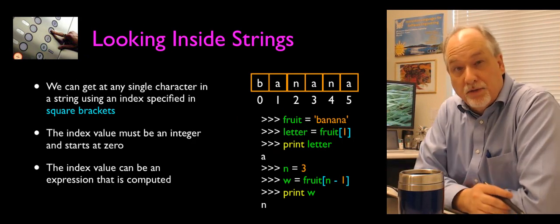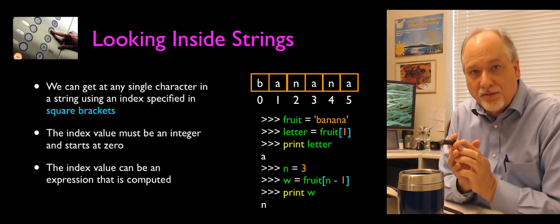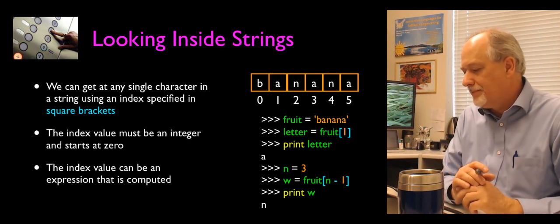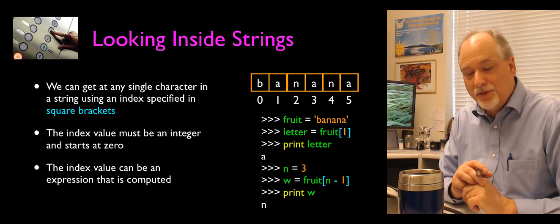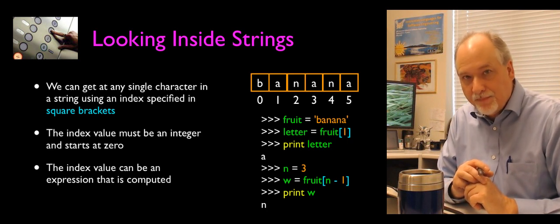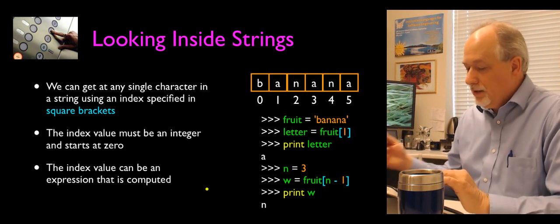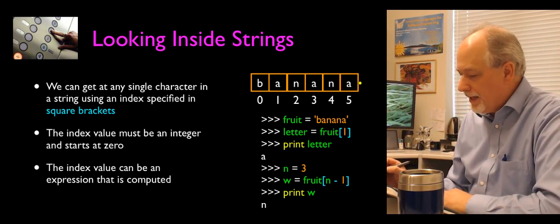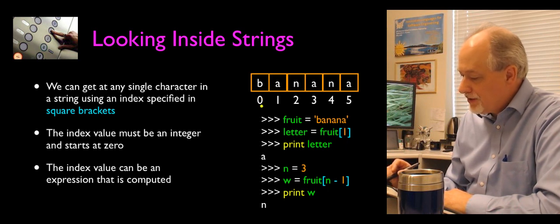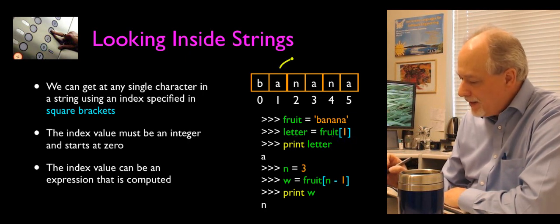The thing we're going to start doing now is diving into strings. Strings are addressable on a character-by-character basis. A string is a sequence of characters, and we can look inside them using what we call the index operator — the square brackets. We've seen square brackets in lists, and a string is a special kind of list of characters. So if we take the string banana, the first character starts at 0.